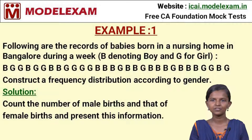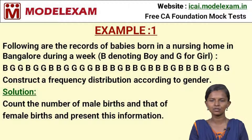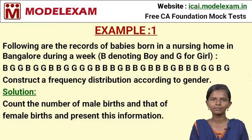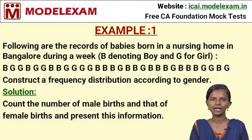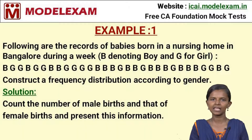Example 1: The question gives records of babies born in a nursing home in Bangalore during a week, where B denotes boy and G denotes girl. We have to construct a frequency distribution according to gender. The solution requires counting the number of B's for male births and the number of G's for female births.